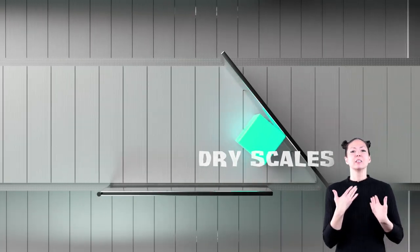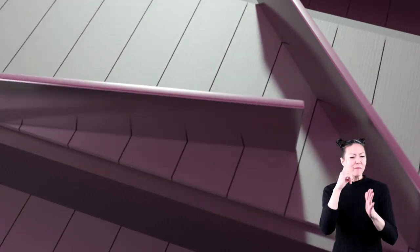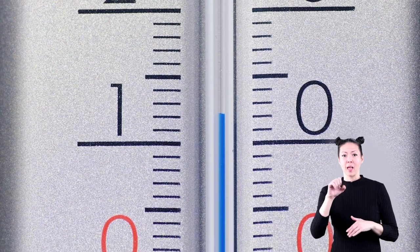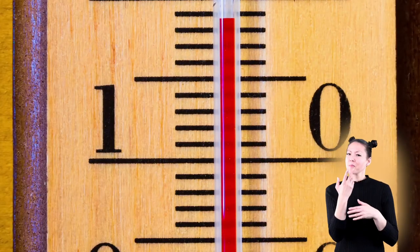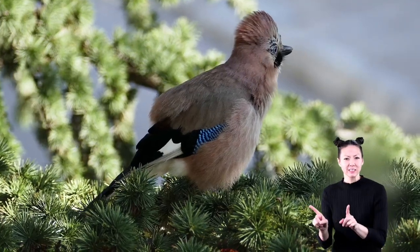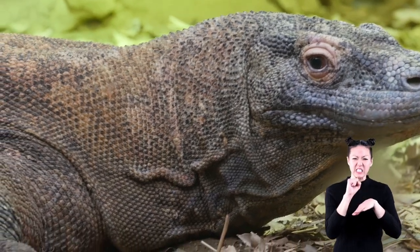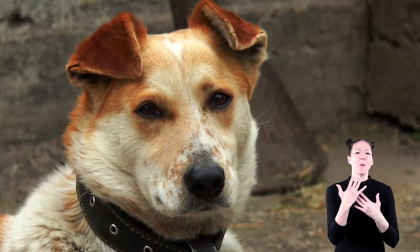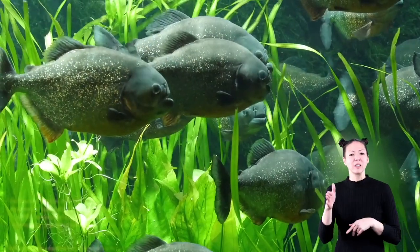Each group of animals has its own unique traits, but some groups also share one or more of the same traits. For example, amphibians and reptiles are both cold-blooded. Fish and birds both lay eggs, and birds and mammals are both warm-blooded. Amphibians have smooth, moist skin, while reptiles have dry, hard, scaly skin. Mammals are warm-blooded, but reptiles are cold-blooded. Birds have wings and live on land, while fish have gills and live in the water. Scientists group animals into different classes to make it easier to study them.